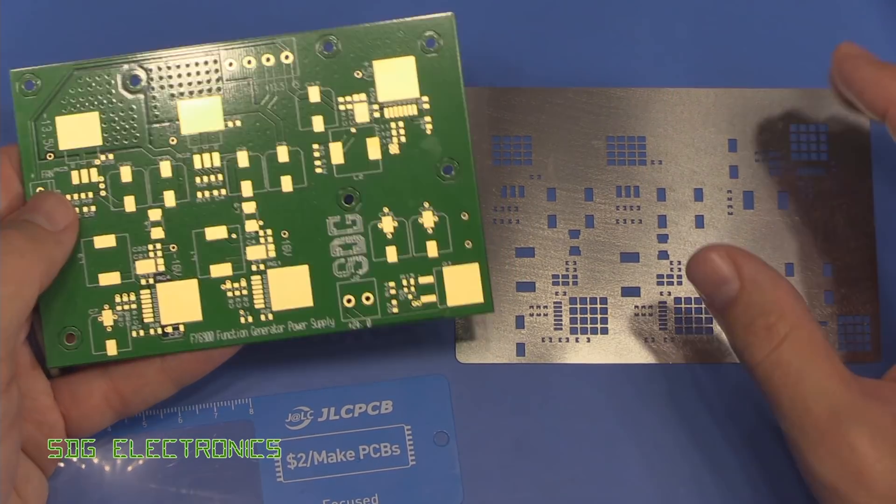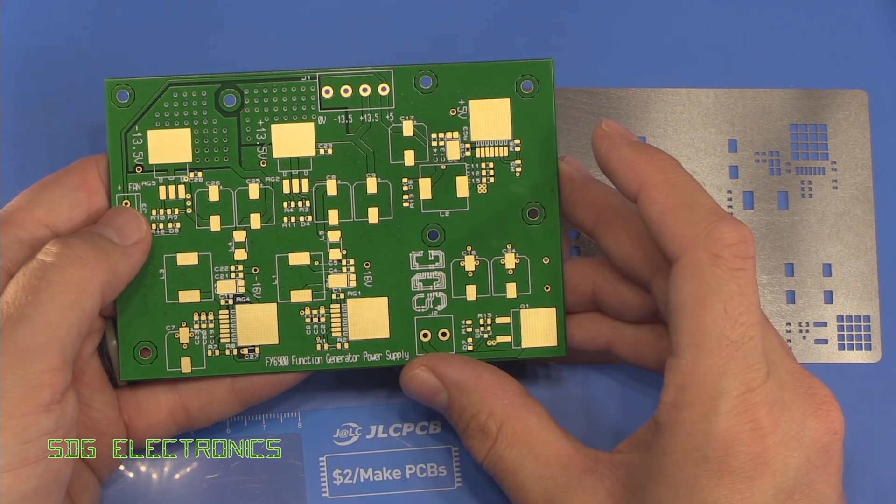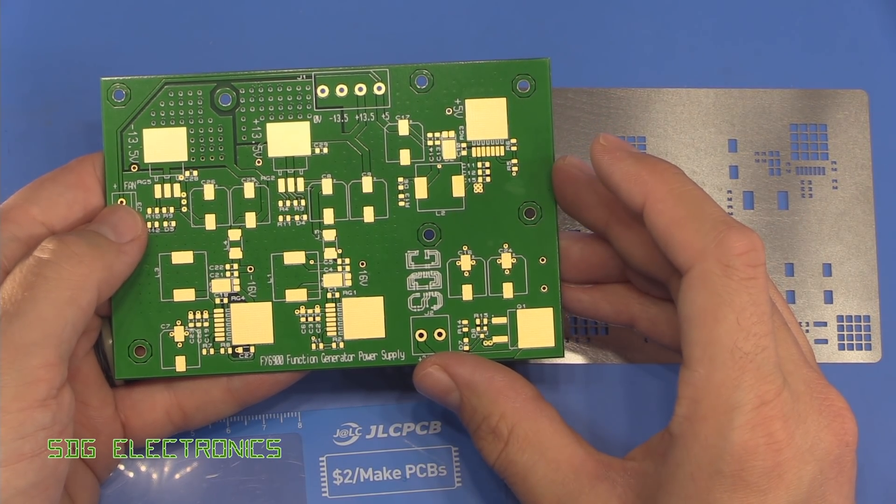So we've got the stencil. What I'm going to do is apply the solder paste to the PCB, place the parts and reflow the board.